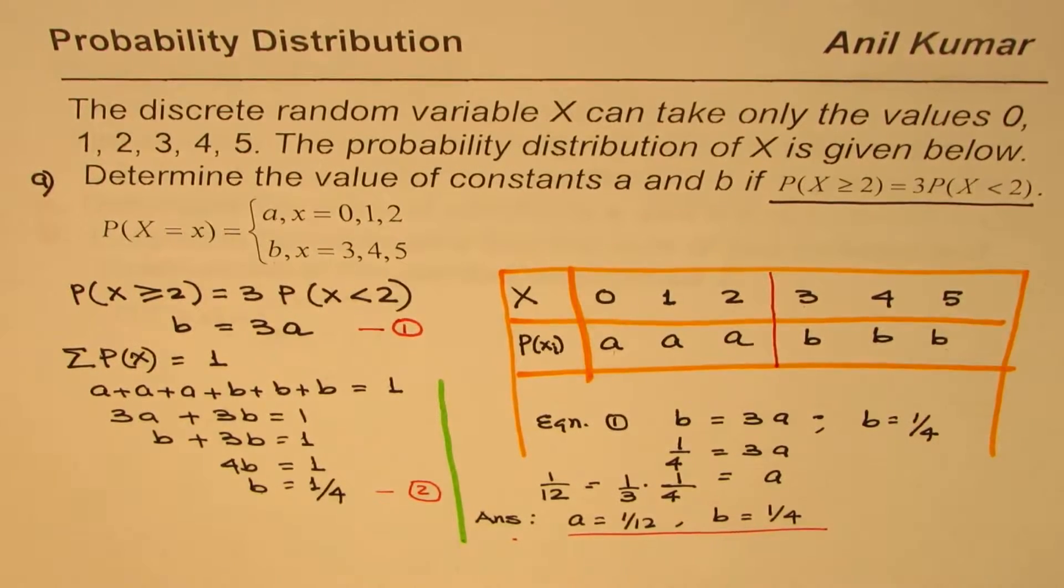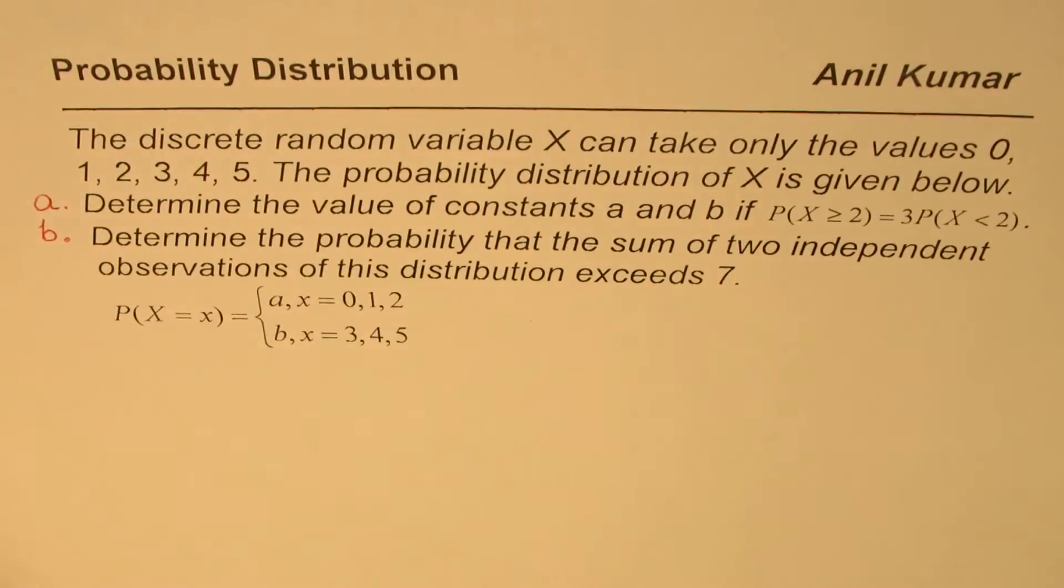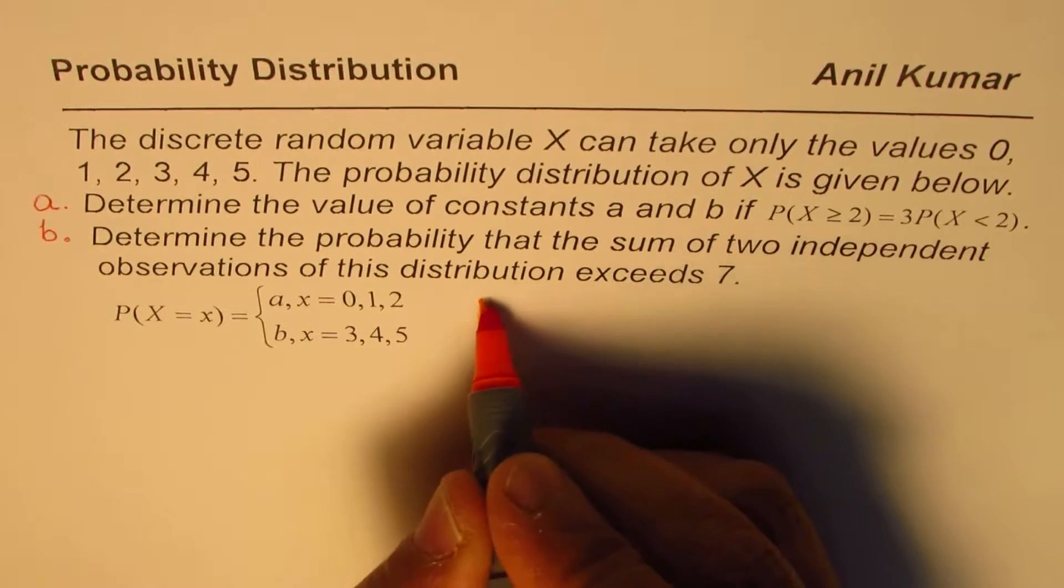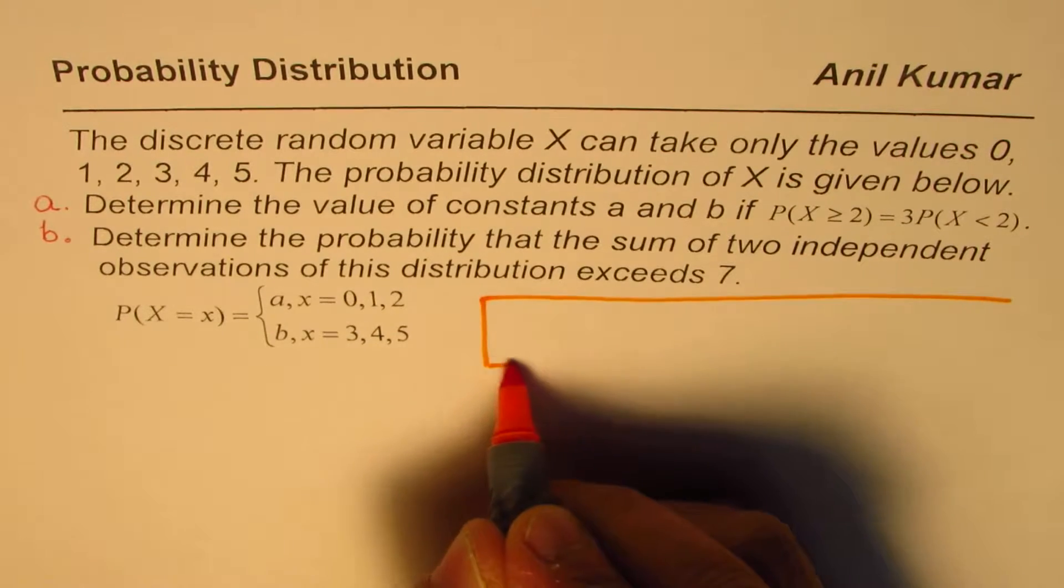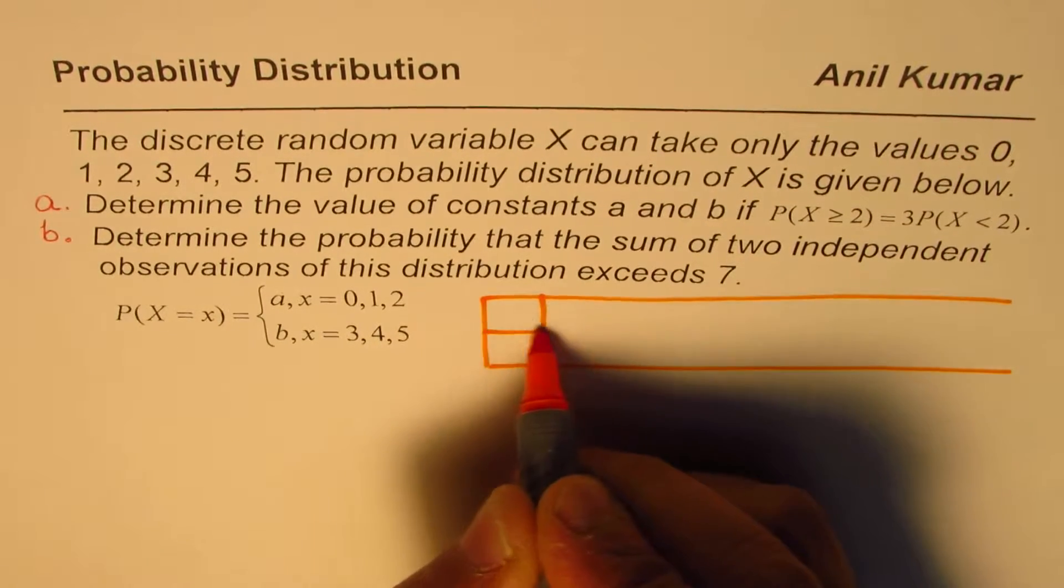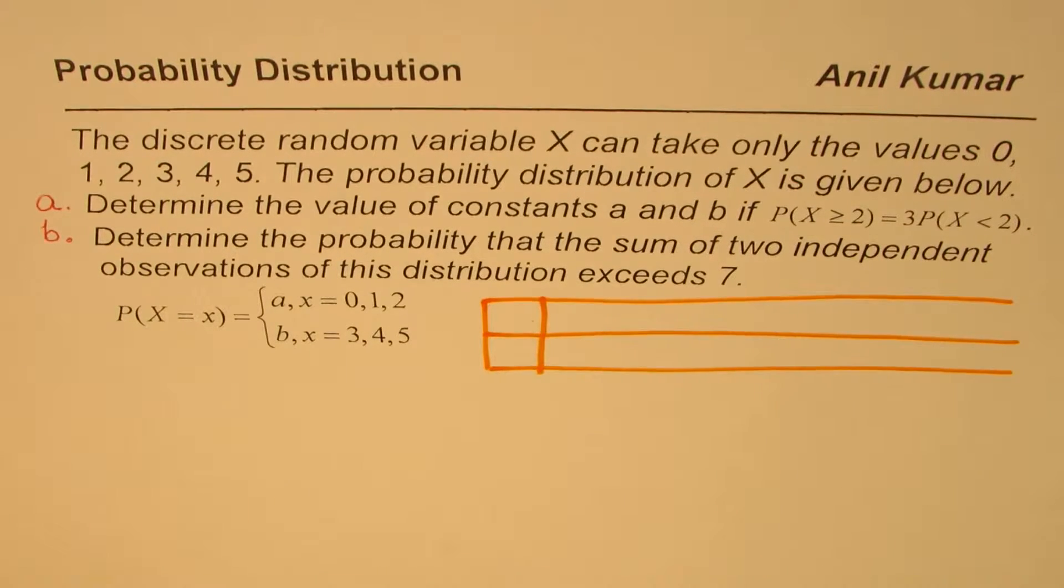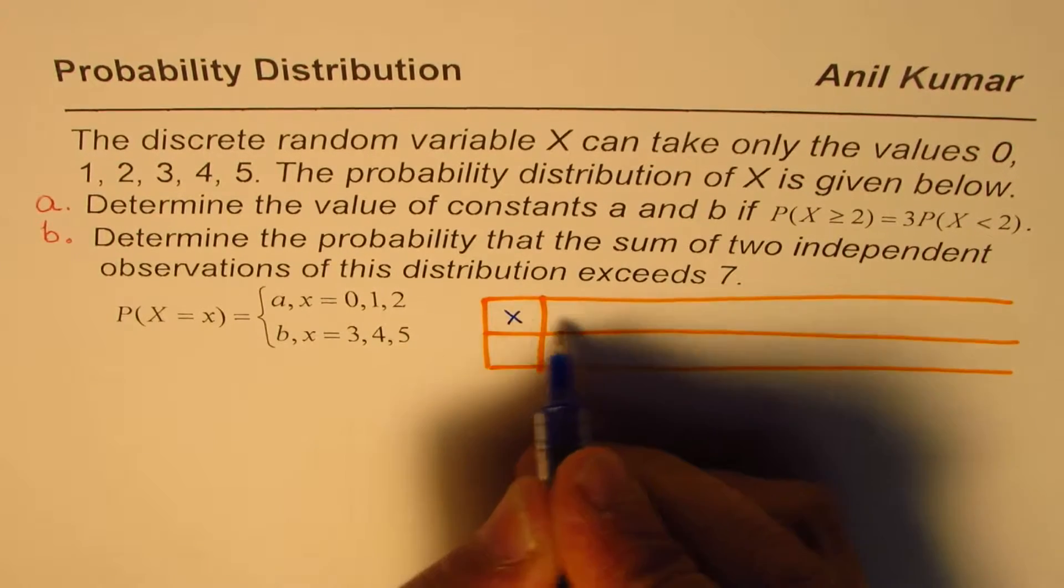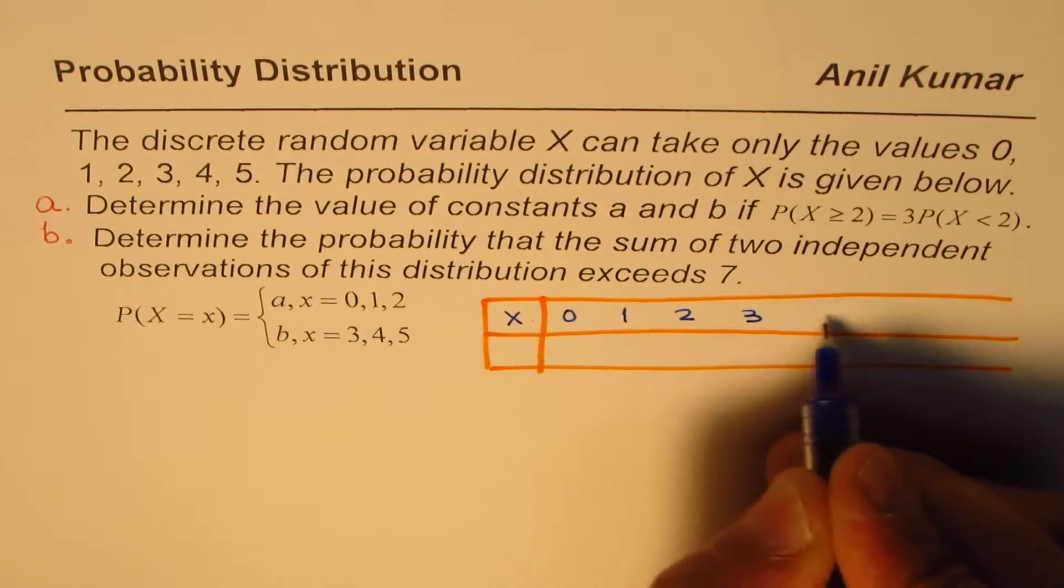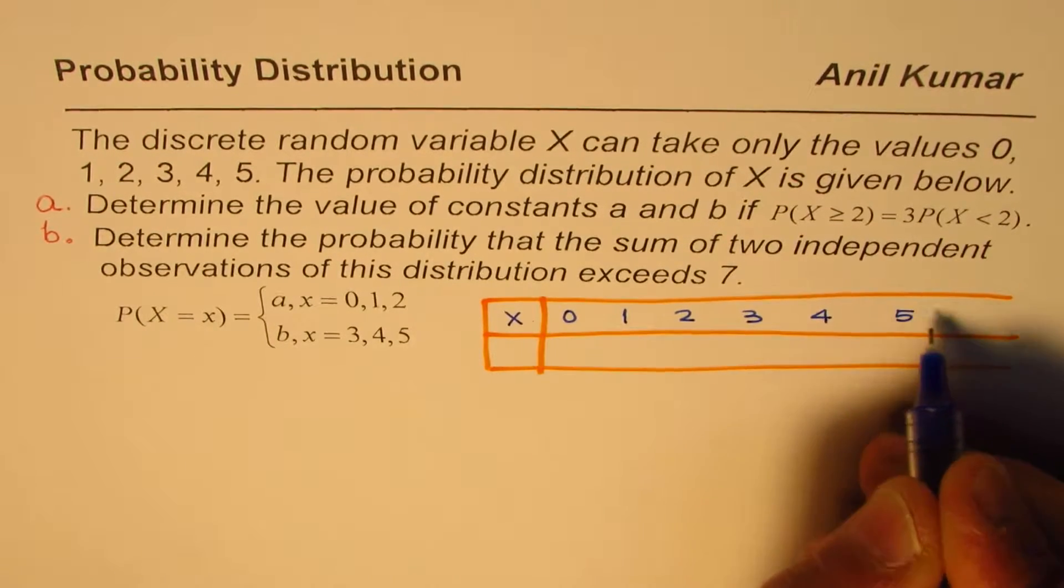For part B, we will actually begin from here now. So let me write down the distribution table from the previous solution, and then we will once again talk about it here. And then continue with the part B of this question. So what we have here is the random variable x can have values 0, 1, 2, 3, 4, or 5.